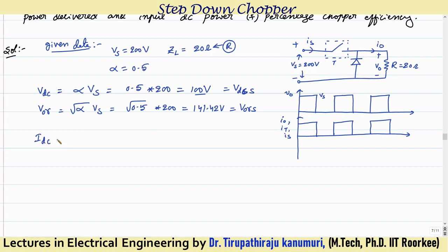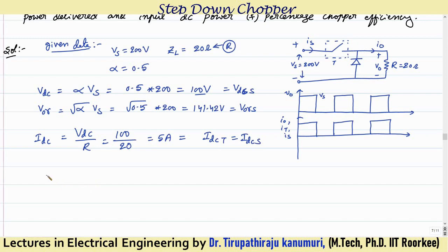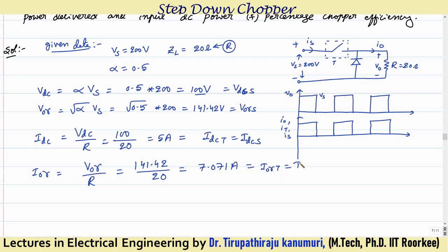Average output current I_DC = V_DC / R = 100 / 20 = 5 A. RMS output current I_RMS = V_RMS / R = 141.42 / 20 = 7.071 A. Since it is a purely resistive circuit, these same values apply for the thyristor current and the source current — all are equal.